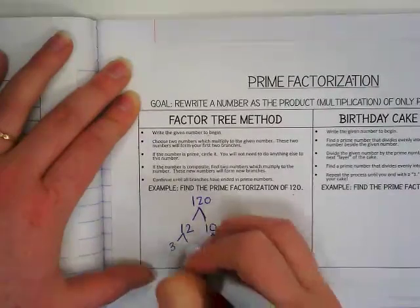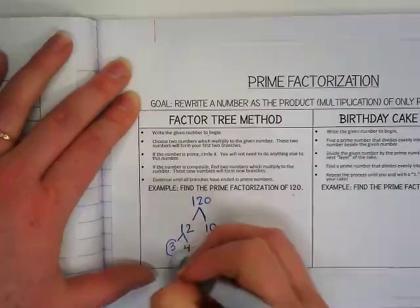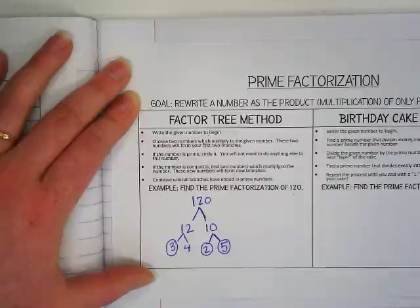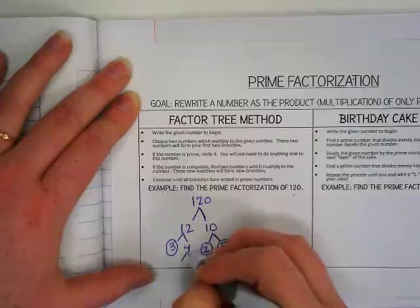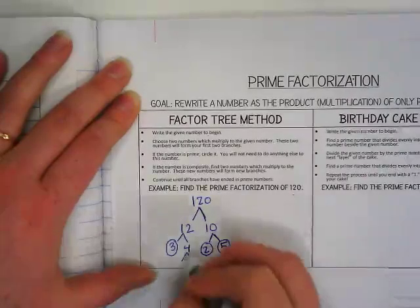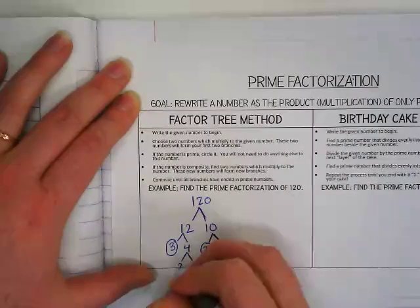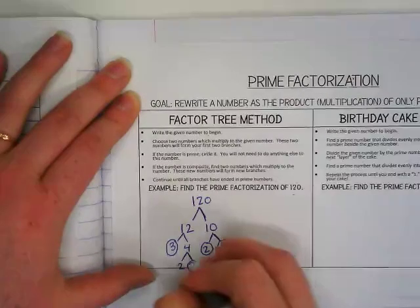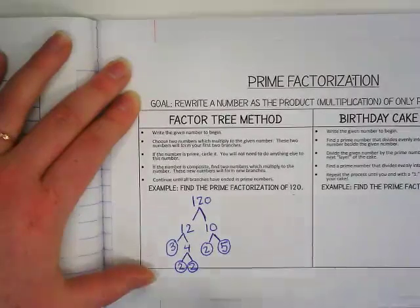4 is not prime, so we're still going to break it down until we get to prime factors. The factors of 4 are 2 and 2. So now we have our factor tree and we can write this out.